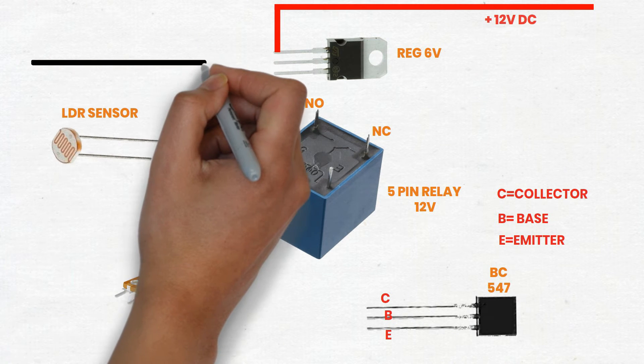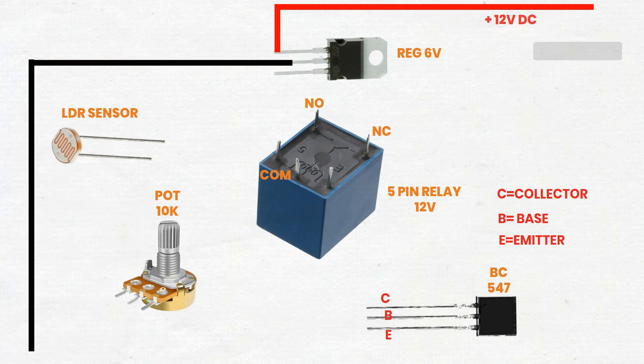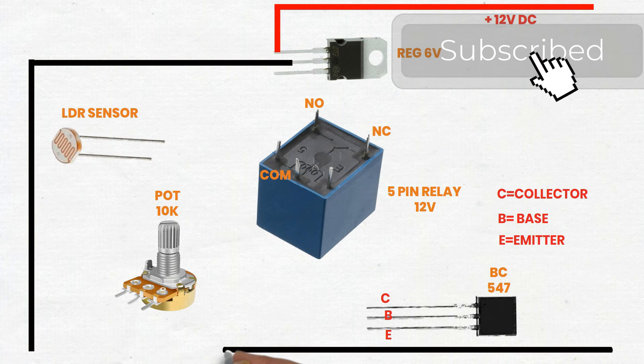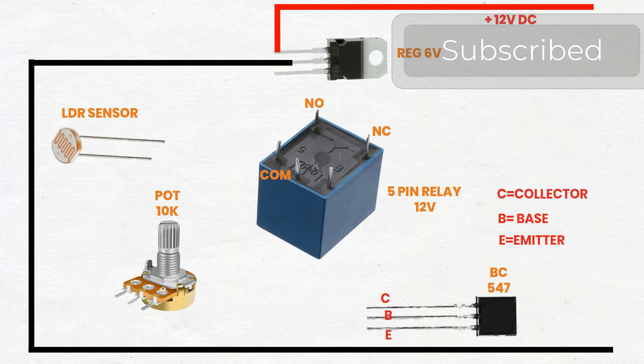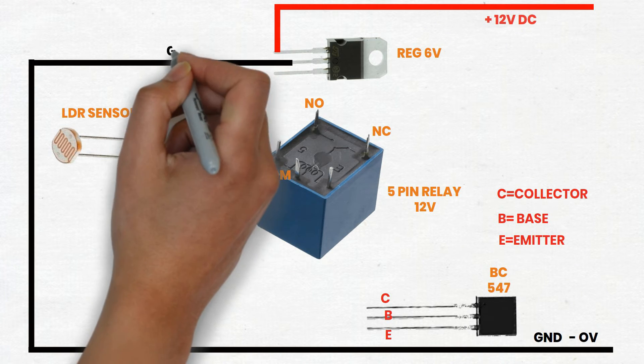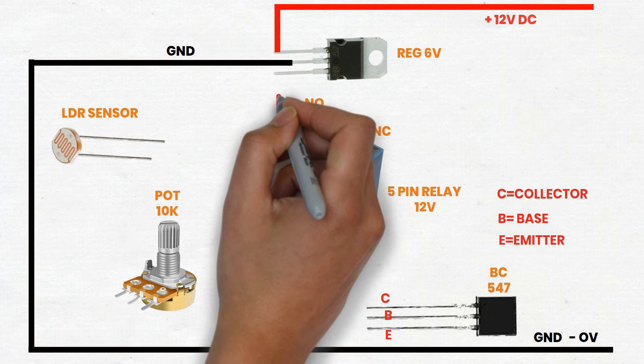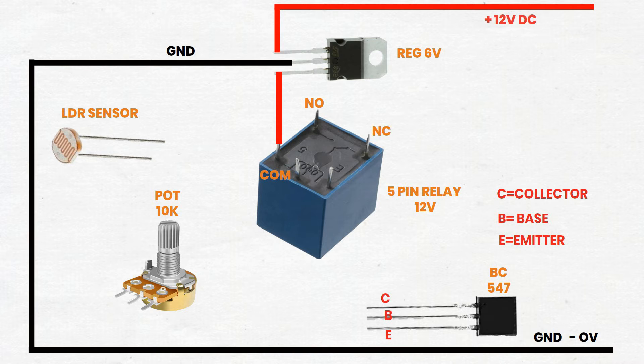Pin 2 Ground: connect to the ground terminal of your power source. Pin 3 Output: connect to coil terminal of the relay for stable 6V output.